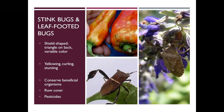Stink bugs and leaf-footed bugs are larger insects than the ones we've been talking about, and they do have piercing-sucking mouthparts — but these are usually not feeding on foliage. They typically feed on fruits, nuts, and seeds, such as pecans, sunflowers, tomatoes, peppers, and eggplants. If feeding on foliage, they cause yellowing and curling; if feeding on fruit, you'll see a yellow spotty appearance. You can still eat the fruit, it just doesn't look as nice.